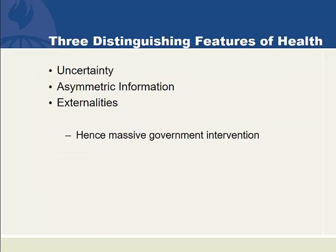When we talk about health, health economists have traditionally identified three distinguishing features of health: uncertainty, asymmetric information, and externalities. And because of these three features, we believe that government intervention may be warranted. Let's cover why these three features motivate government intervention.